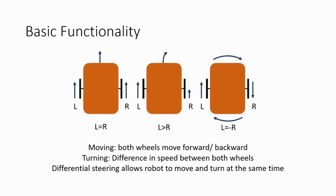Let us begin with the strategy, starting with steering. To steer the robot, we set the speed of both the left and right wheels. When both wheels are set to forward, the robot moves straight. When the left wheel is set at a higher speed than the right, the robot turns to the right, and vice versa. Maximum rotation is obtained by setting the wheels to rotate in opposite directions, causing the robot to turn on the spot. Differential steering allows us to combine turning and moving into one action, without having to consider separate pieces for each.